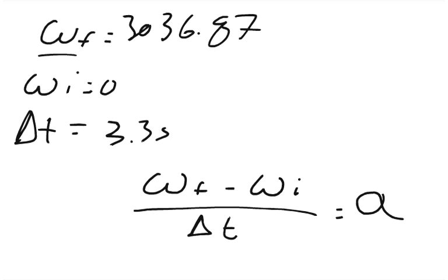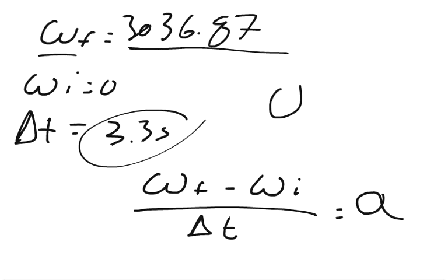And so we just plug in our numbers. So 3,036.87 divided by 3.3. So the angular acceleration equals 920.26 radians per second squared.